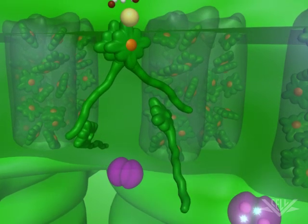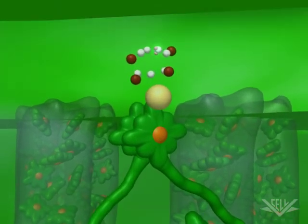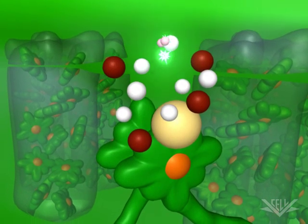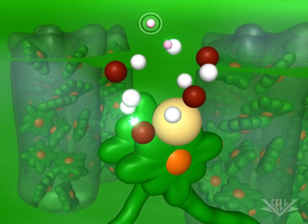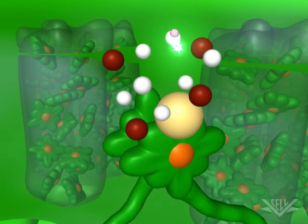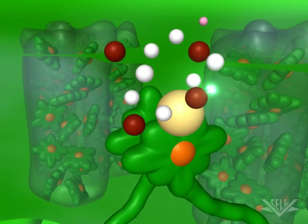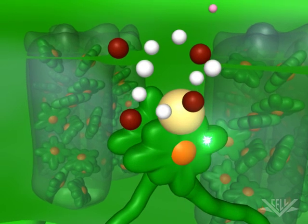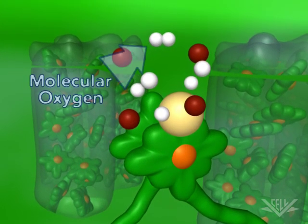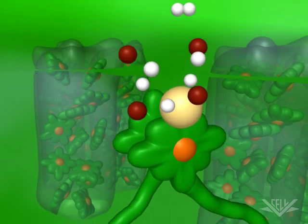The two electrons lost from Photosystem II are replaced by the splitting of water molecules. Water splitting also releases hydrogen ions into the lumen. This contributes to a hydrogen ion gradient, similar to the one created by mitochondrial electron transport. After two water molecules have been split, one molecule of molecular oxygen is created.